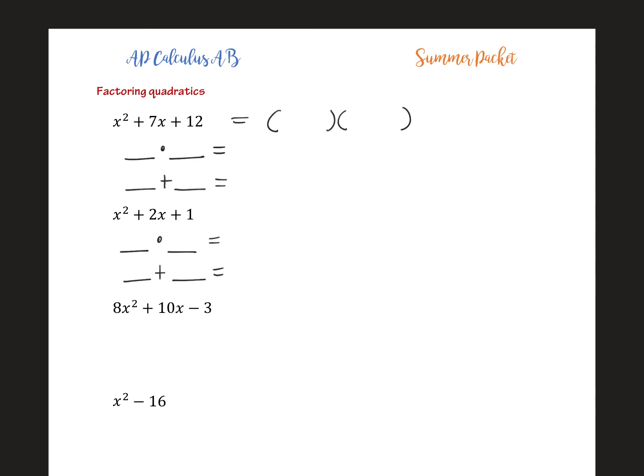So the idea of factoring is we're trying to find two numbers that will multiply to this value, that add to this value. What two numbers multiply to 12 that add to 7? In this case, 3 times 4 is 12, and 3 plus 4 is 7. So for this problem, this factors into x plus 3 times x plus 4.